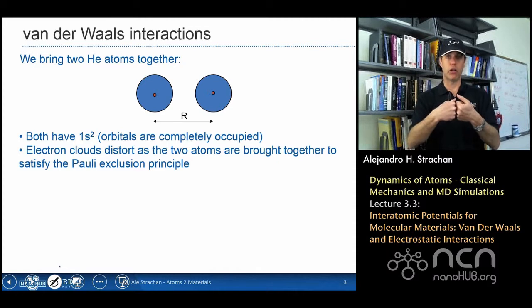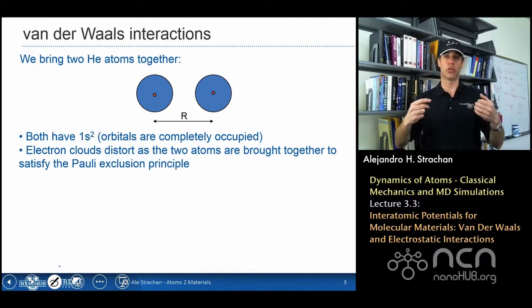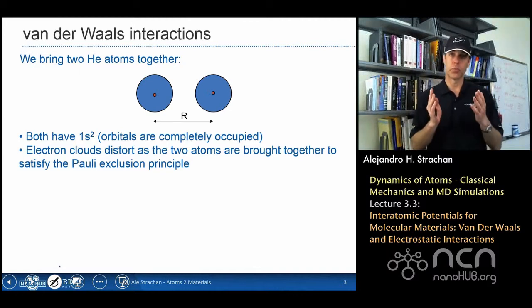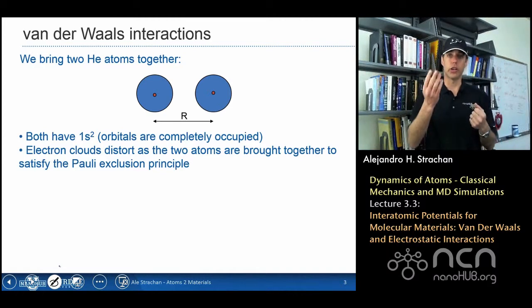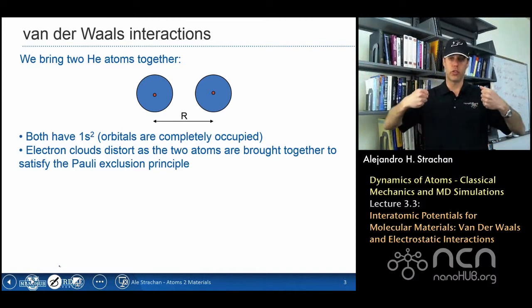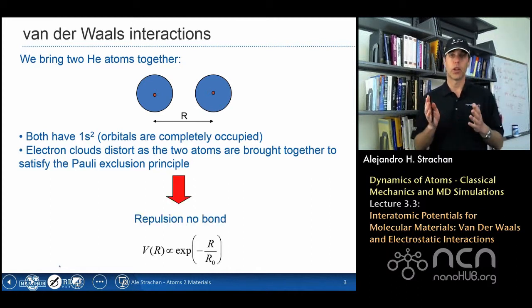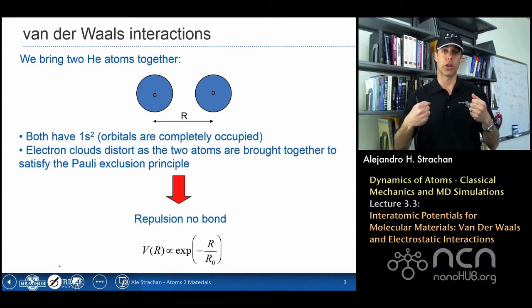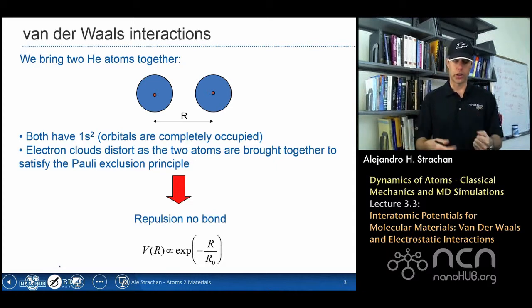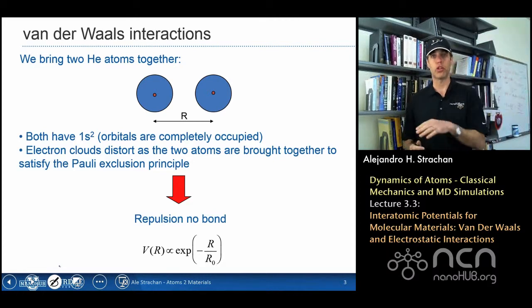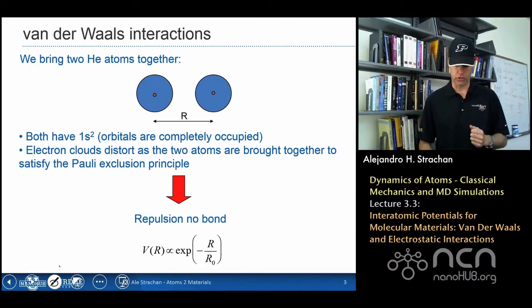Actually what happens is as I try to push them together, the Pauli exclusion principle forces the wave function to distort, the electrons to distort, so that they don't occupy the same states. And that leads to an increase in energy. So at very short distances as I push them together there's repulsion, and this repulsion can be described with an exponential function. So exponential repulsion between these atoms at short distances.